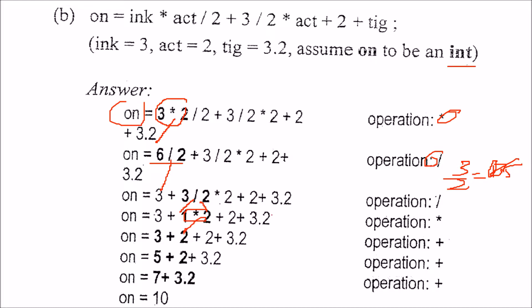Then all are done, now let us see this one, 3 plus 2, 5, then 5 plus 2, 7, and then 7, and this 3.2, when we add them, this will be 10.2. But since on is an integer, this 0.2 will be discarded, only 10 will be given here. So, final value will be 10.